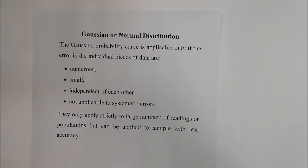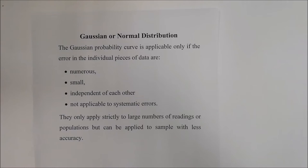Let's have a look at Gaussian or normal distribution. Before getting to the graph, let's go through the purpose and how it all comes together. The Gaussian probability curve is applicable only if the errors in individual pieces of data are numerous, small, and independent of each other — and not applicable to systematic errors.